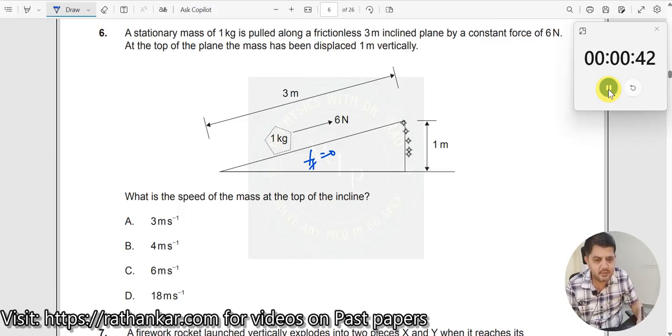Here, you have an object over here, so this is 1 meter over here. You are pulling it until here. What is the speed of the mass at the top of the inclined? What is the speed at this point?